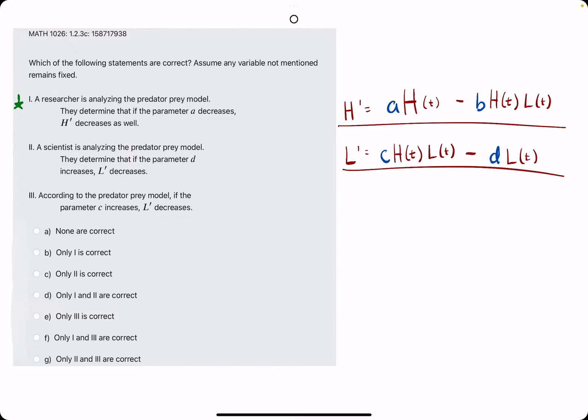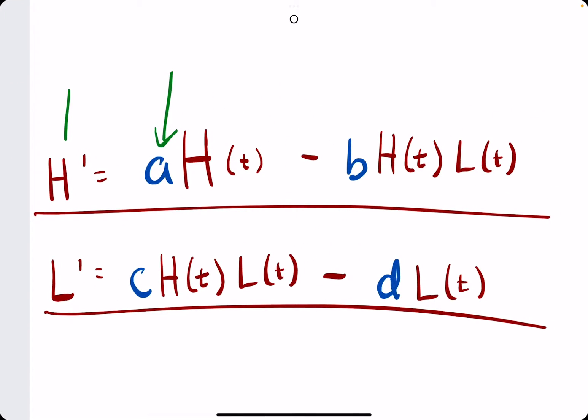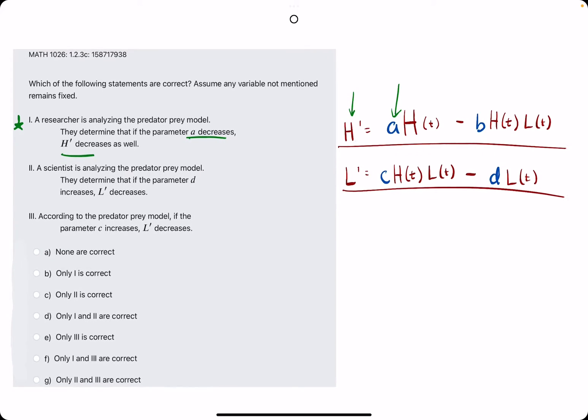Number one: they determined that if A decreases, then H' decreases as well. So if A goes down, yes, that's correct—H' will also go down.